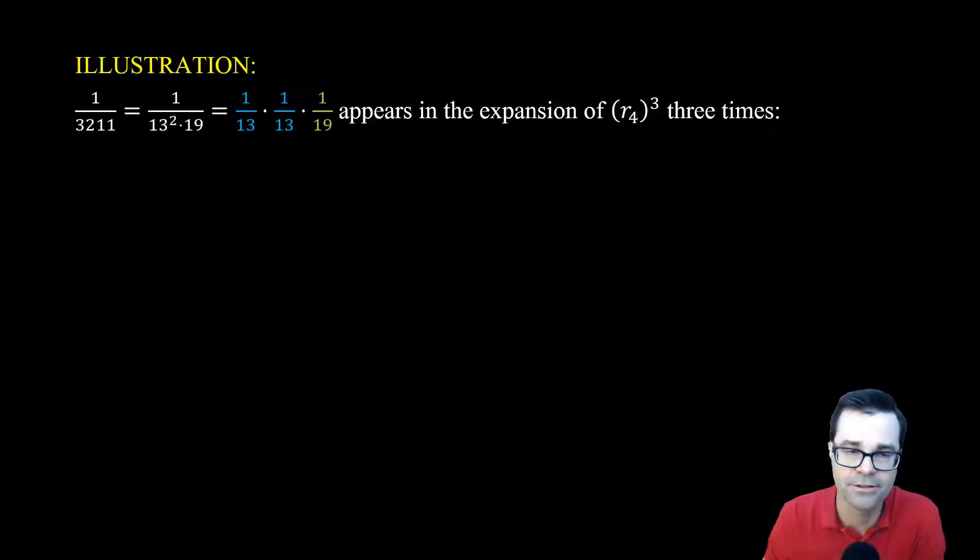That means we're only looking at the tail starting at 1 eleventh on. If we raise that entire tail to the third power, what we get is a product of three infinite series. And so this term, 1 over 3,211, has to show up at least once in that expansion.